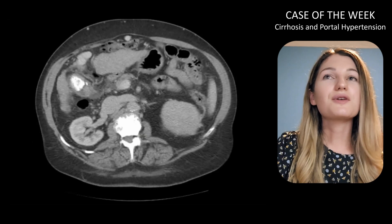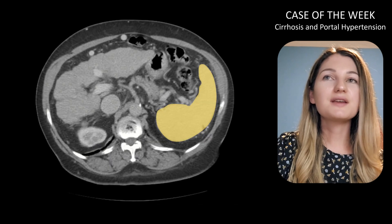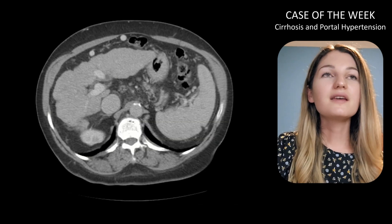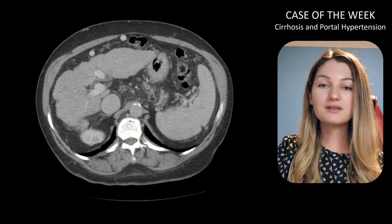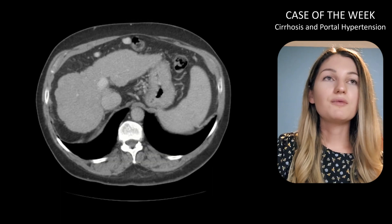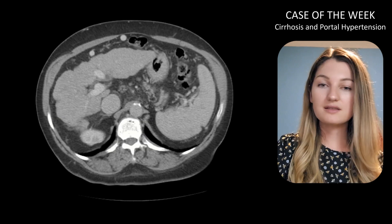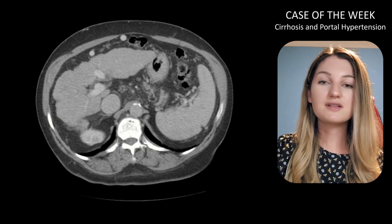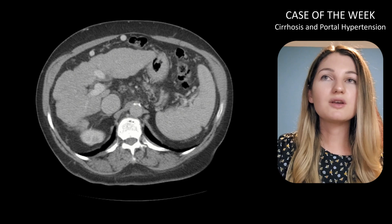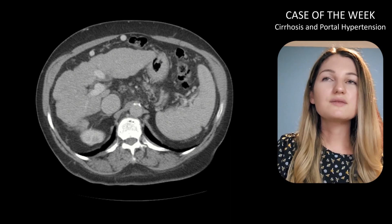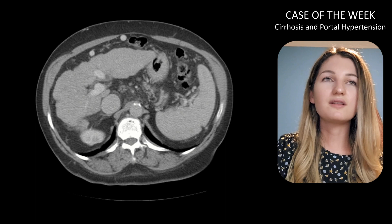Scrolling back up, let's take a look at the spleen — this spleen is definitely enlarged. Unlike the liver, which you measure at the mid-clavicular line, you can measure the spleen in any dimension. We want our spleen to be around 12 centimeters, and we definitely don't want it to be over 14 centimeters. This one measured 14.5 centimeters, so it is definitely enlarged.